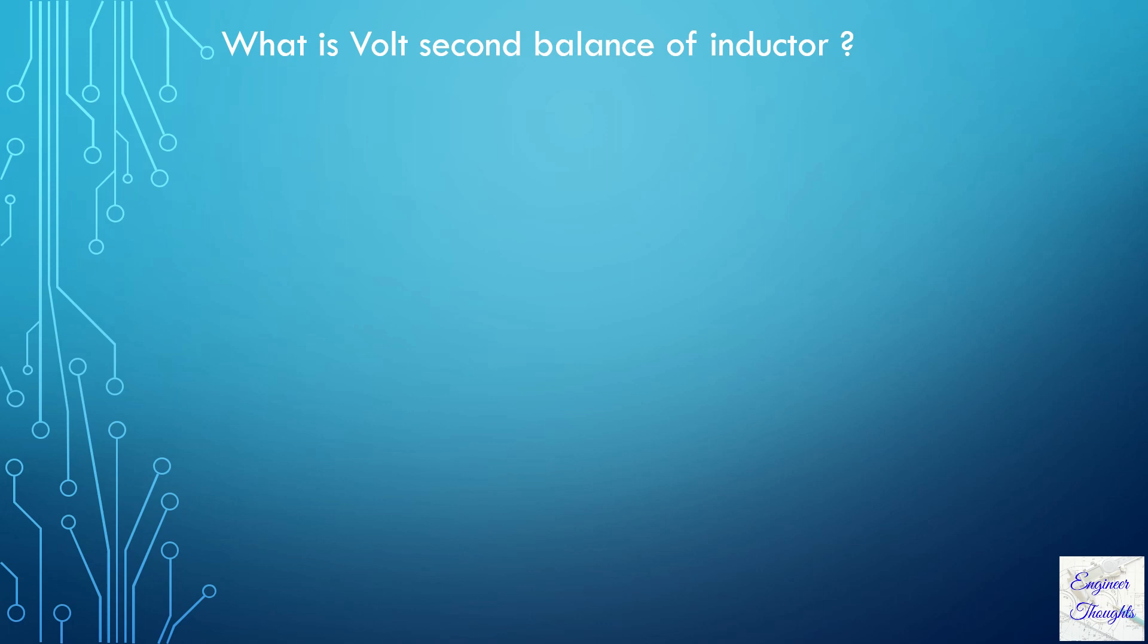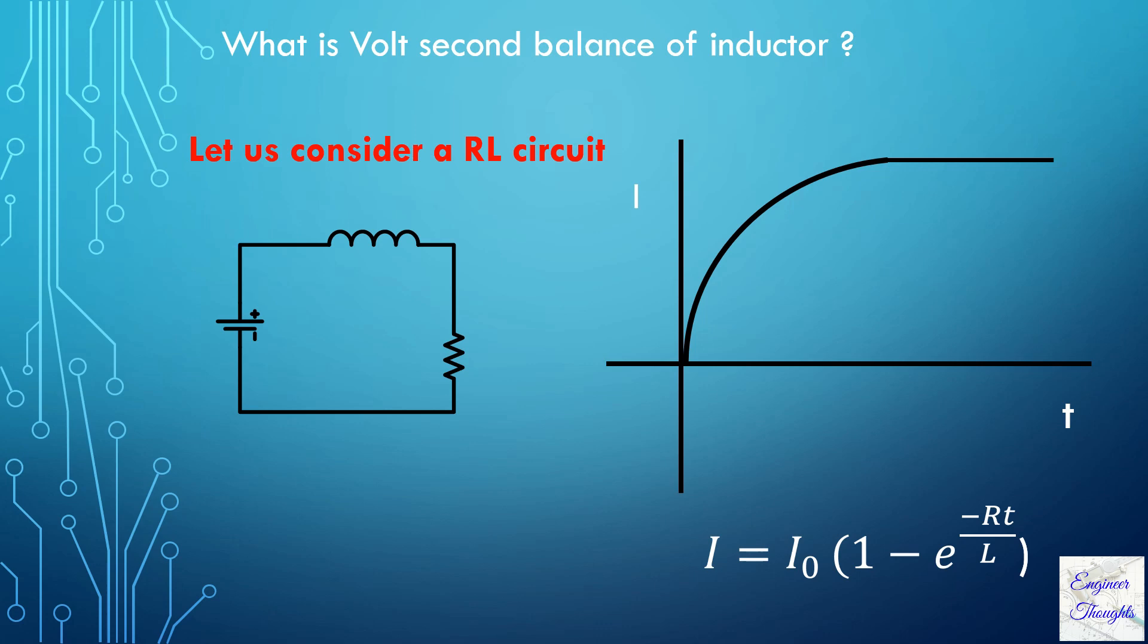To understand the volt-second balance, let us consider the RL circuit. The current equation is given by I = I₀(1 - e^(-Rt/L)), where there is a saturation region where the inductor loses its property and acts as a normal conductor or a wire.